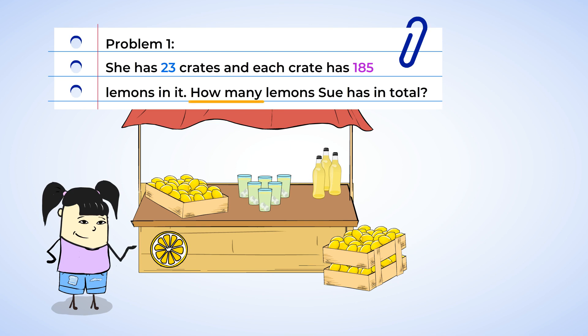She has 23 crates, and each crate has 185 lemons in it. She can make a lot of lemonade. I wonder how many lemons Sue has in total. Well, in order to find out, we're going to have to multiply. It's definitely a multiplication problem. So we need to multiply 185 by 23. Let's get started by setting up the problem.